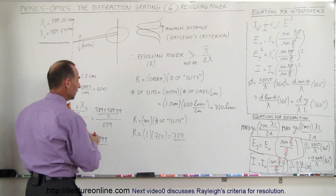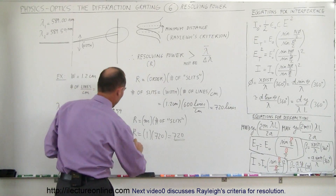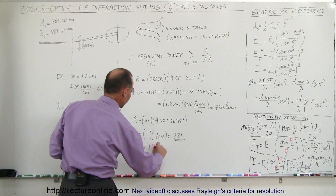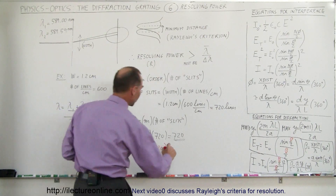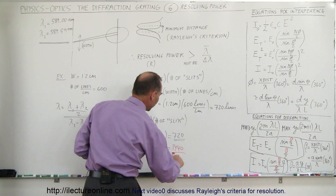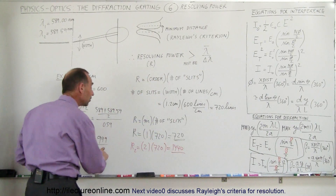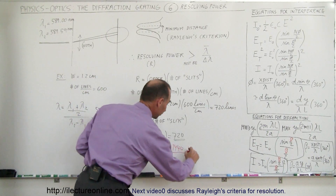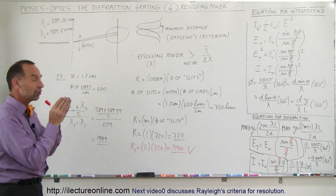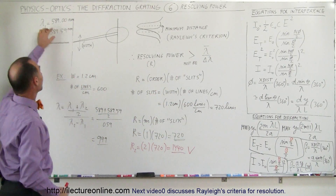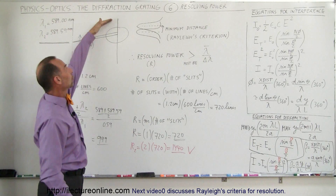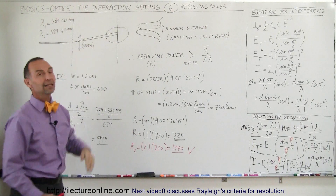For the second order, R equals 2 times the number of lines in the diffraction grating, which is 2 × 720 = 1440. Since 1440 is bigger than 999, in the second order we are going to be able to see the separation of the two sodium lines. Even though they're so closely spaced in wavelength, you can resolve them in the second order, but not in the first order.